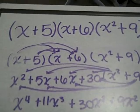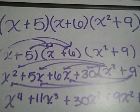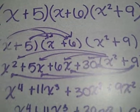We made our question like this. We knew that we had to have two real solutions and two imaginaries. So we did x plus 5, x plus 6, and then x squared plus 9.